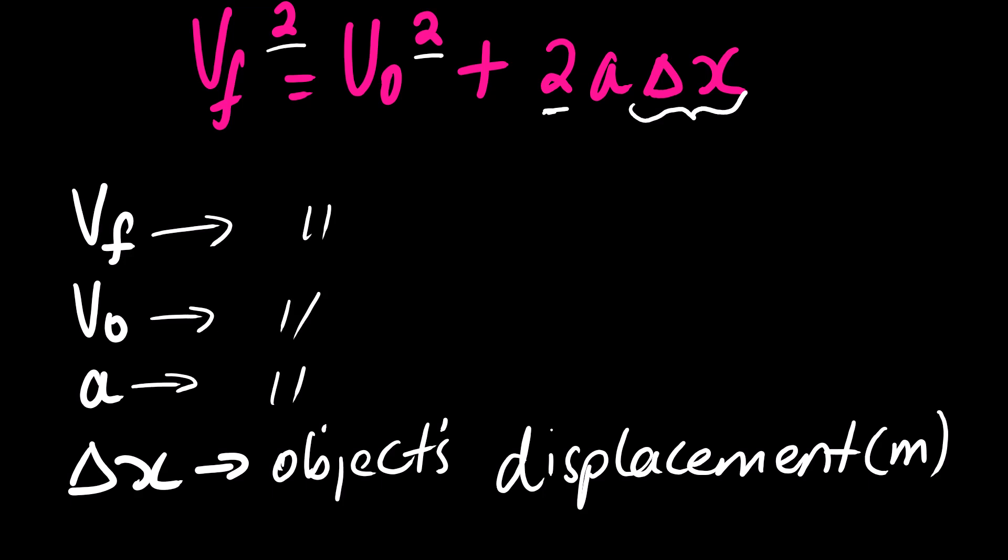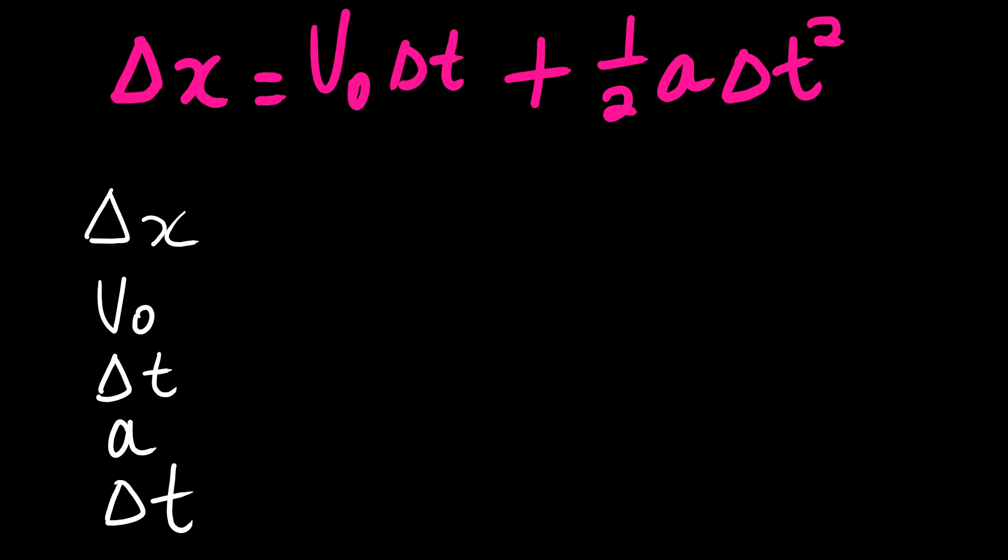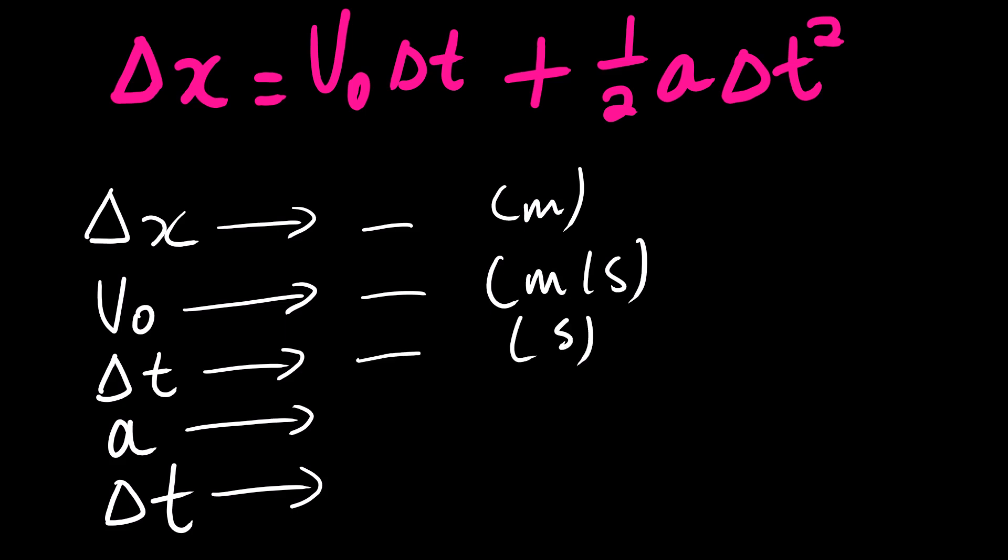For the final equation, we actually know each and every symbol here. We know that this is the displacement of the object in meters, and this is the initial velocity in meters per second. We know that this is time in seconds. We know that this is acceleration in meters per second squared, and then we also have time again, which is in seconds.